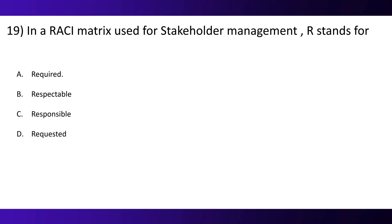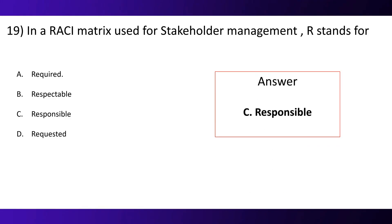Question 19. In a RACI matrix, which is used for stakeholder management, R stands for: Option A, required. Option B, respectable. Option C, responsible. Option D, requested. And the correct option is C — responsible.